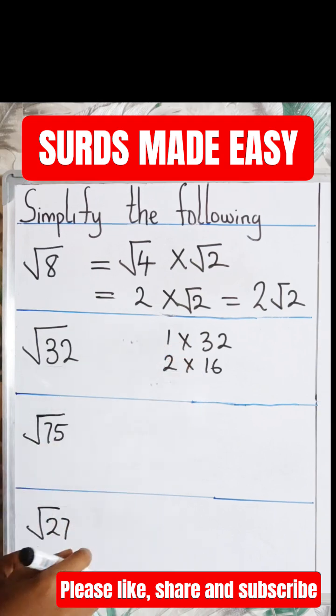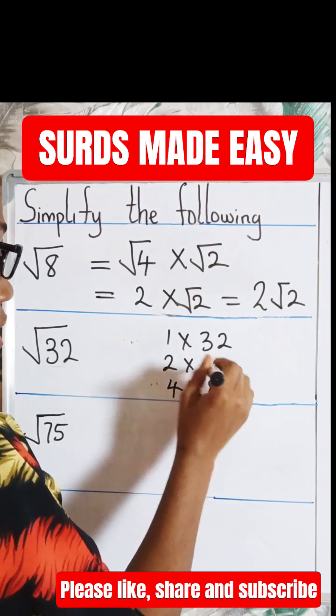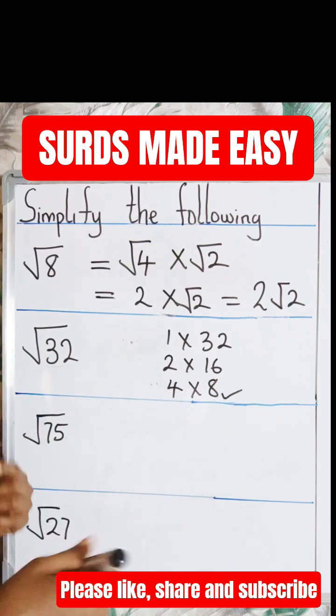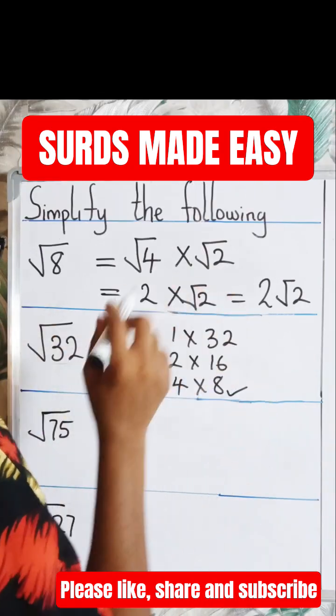So 1 times 32 equals 32. 2 times 16 equals 32. 4 times 8 equals 32. If we go with this one, we need to simplify further. If we go with this one, mission accomplished. So let's go with the second one, which is 2 times 16.